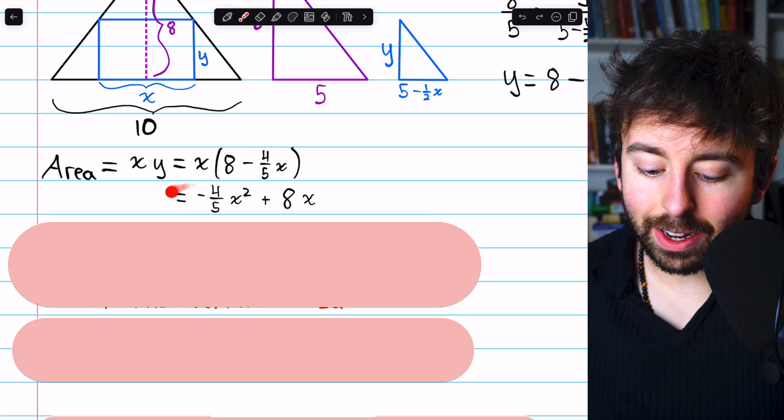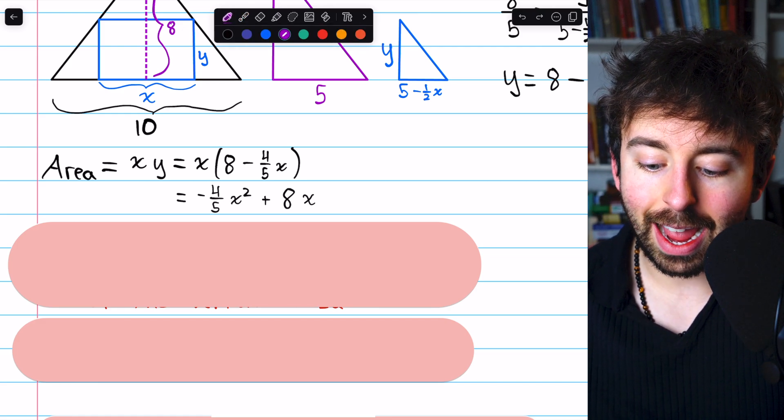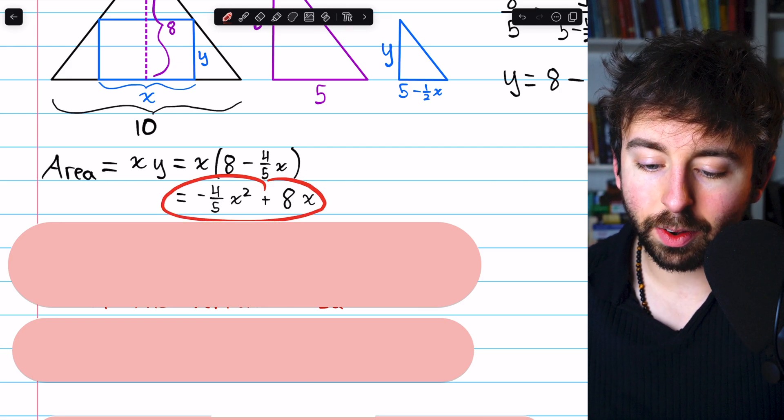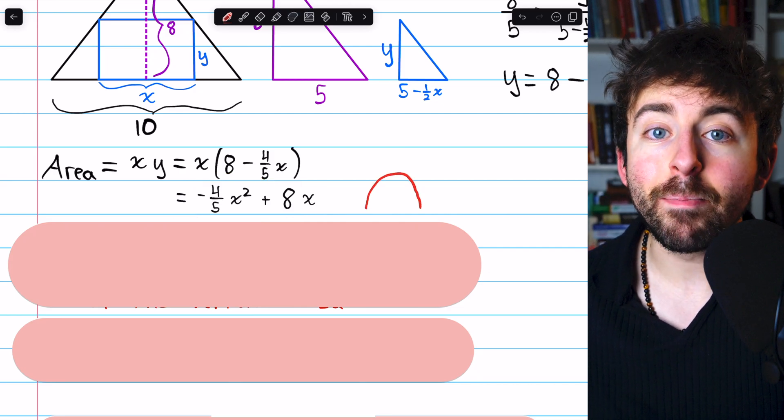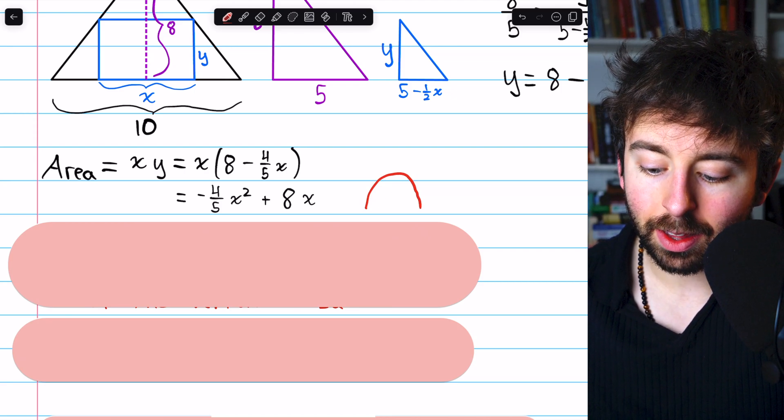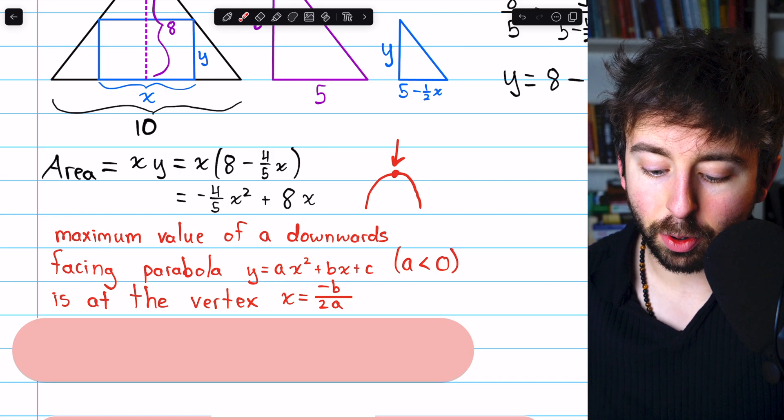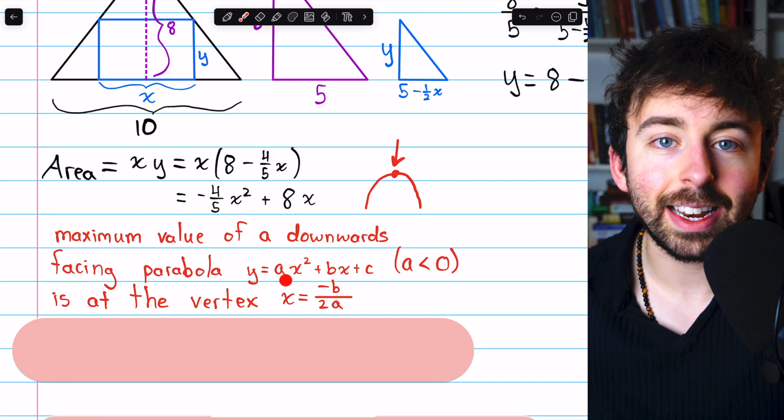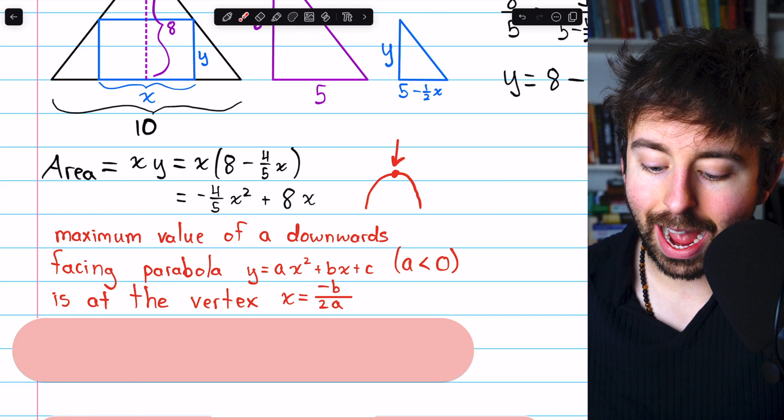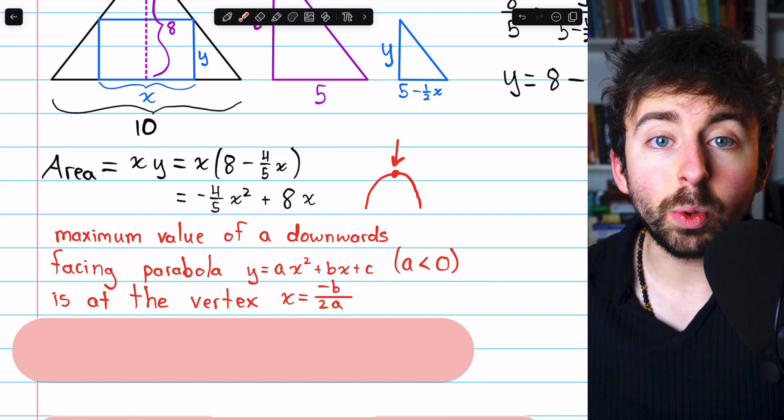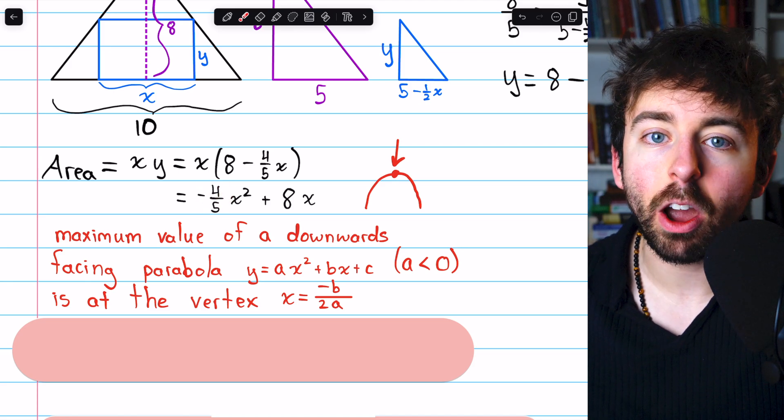The question is where is this taking on its maximum value, this area of the inscribed rectangle? That's actually a pretty easy question to answer because you should notice this is a quadratic function where the leading coefficient is negative, which means its graph is a downwards-facing parabola. The maximum of a downwards-facing parabola is at the vertex, and there is a simple formula to find the vertex. The maximum value of a downwards-facing parabola, if we write it like this, where a is negative because it's a downwards-facing parabola, the maximum is at the vertex where x equals negative b over 2a. So we just have to apply that to our situation, negative 8 over 2 times a, that leading coefficient.